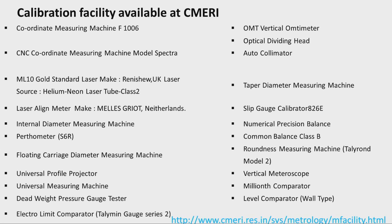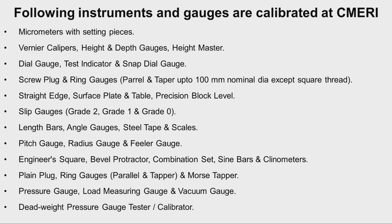The Central Mechanical Engineering Research Institute has calibration facilities including a coordinate measuring machine, CNC coordinate measuring machine, ML10 Gold Standard laser, laser align meter, internal diameter measuring machines, perthometers, and universal profile projectors. Instruments and gauges that can be calibrated there include micrometers with setting pieces, vernier calipers, height gauges, depth gauges, height masters, dial gauges, straight edges and slip gauges.